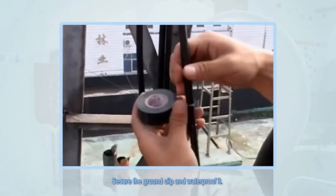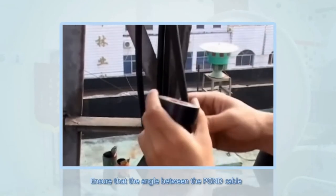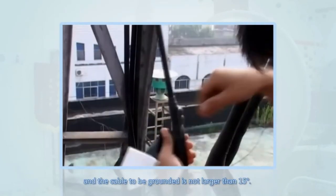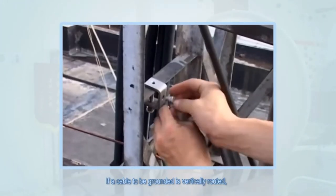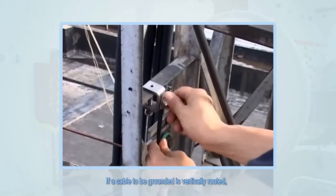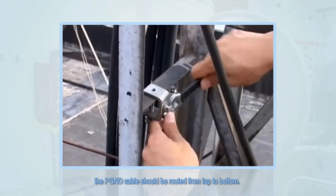Secure the ground clip and waterproof it. Ensure that the angle between the PGND cable and the cable to be grounded is not larger than 15 degrees. If a cable to be grounded is vertically routed, the PGND cable should be routed from top to bottom.